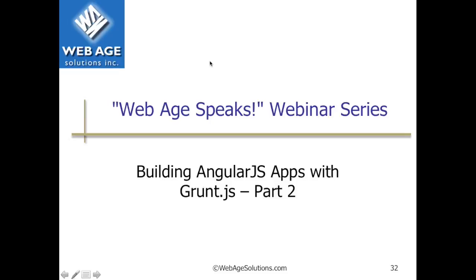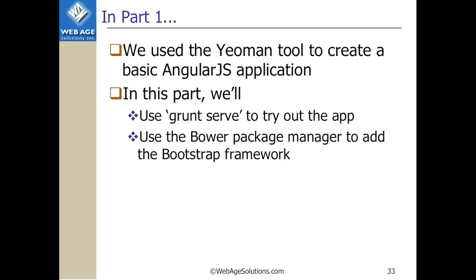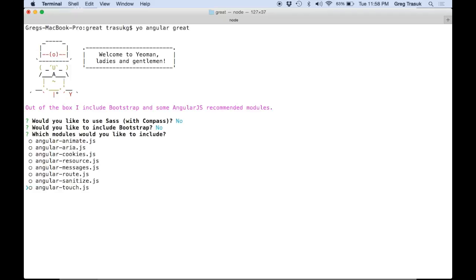Hi, I'm Greg Tracic with WebAge Solutions and this is part two of our look at building AngularJS applications with Grunt.js. When we left off in part one, we had used Yeoman to create the project. Now let's pick up at that point and take a look at the grunt file. We'll use the grunt serve command to start up a test server and try out the app. After that, we'll look at using the Bower package manager to add the Bootstrap framework to the project.